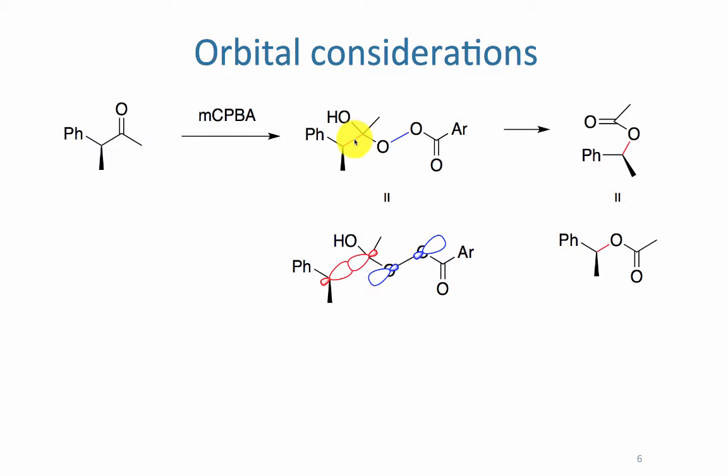Now in order for that group to migrate, we have to have that sigma bond. Look over in the bottom right here. We have the sigma bond, and that sigma bond is a filled orbital. It has two electrons in it.